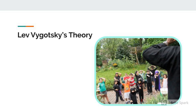Lev Vygotsky is another constructivist, but he had a different view on development than Piaget. He believed that we largely learn through the cultural transmission of tools. In other words, Vygotsky believed that adult models we encounter have a great deal to do with how we learn. For example, we typically learn to speak from the adults in our world who model the development of words. The adults around us also explicitly teach us about new things. Vygotsky did not believe that all children developed the same, and to support his theory, he analyzed different cultures to see how different children developed. His theory relied much more heavily on interaction with adults and collaboration with peers in our environment.